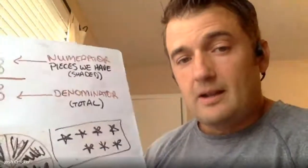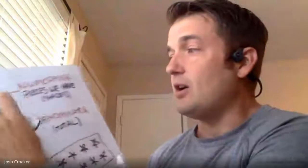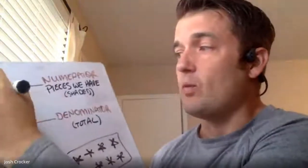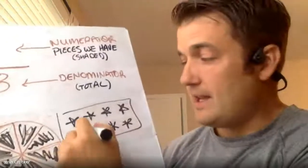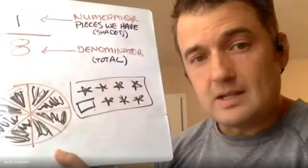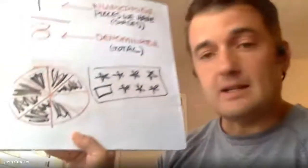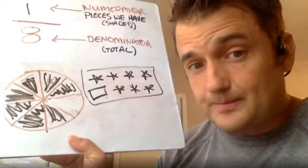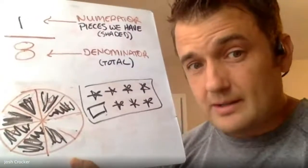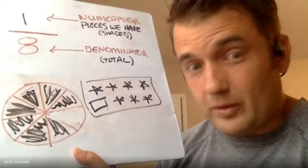Unit fractions are when you just have one. So one-eighth — of this set, one-eighth is our squares. I could say one-eighth of my pizza is gone. That's what a unit fraction is: just one — one-third, one-fourth, one-fifth, one-eighth.